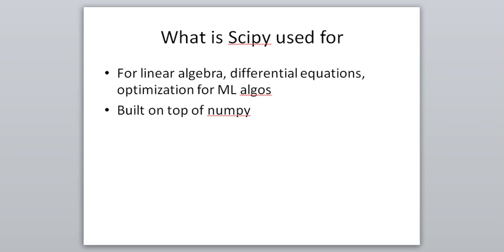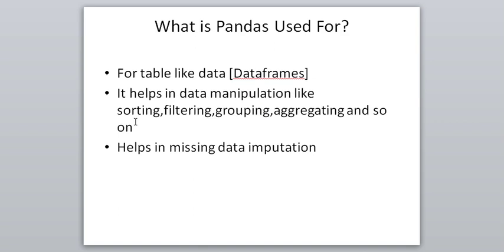If you do optimization in SciPy it might take two lines, whereas the same thing in NumPy may take ten lines of code. Now, Pandas is used whenever you have data in tabular format — meaning rows and columns. You store that data in a data structure called a DataFrame, which is inside the Pandas library. With Pandas you can manipulate this data by sorting, filtering, grouping, and aggregating.